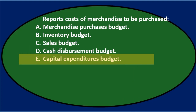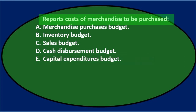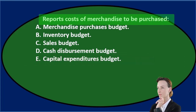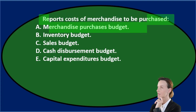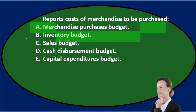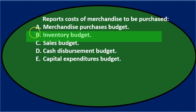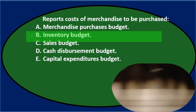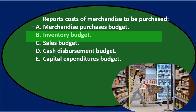Let's go through this again using the process of elimination. Reports costs of merchandise to be purchased. A. Merchandise Purchases Budget — sounds awfully reasonable, I'll keep that one. B. Inventory Budget — that sounds kind of reasonable too, because we're purchasing stuff, merchandise, inventory. So I'll keep that.